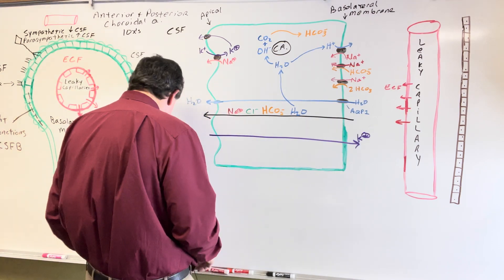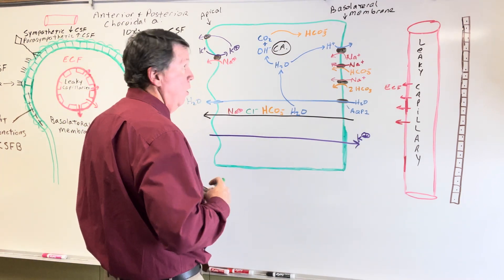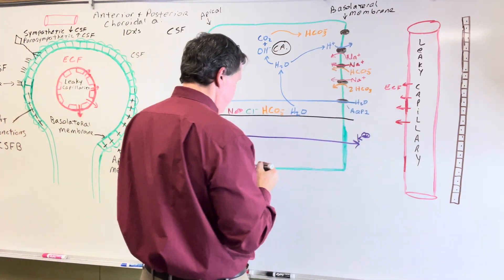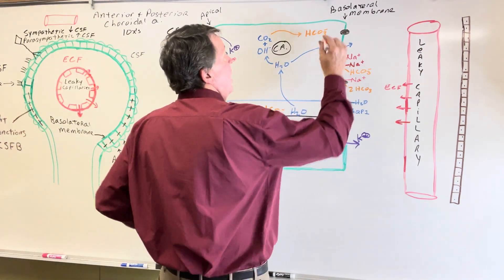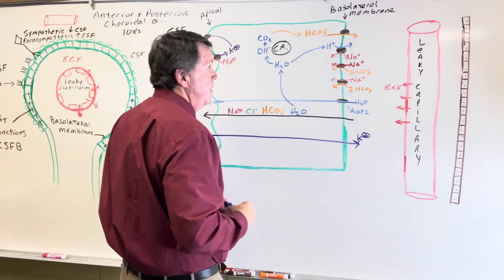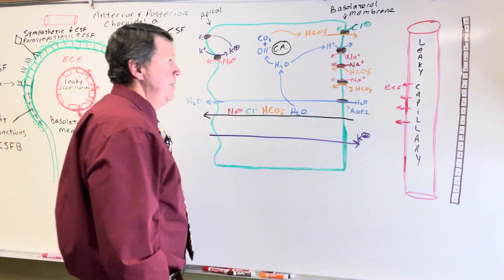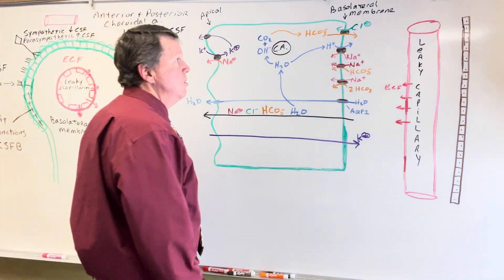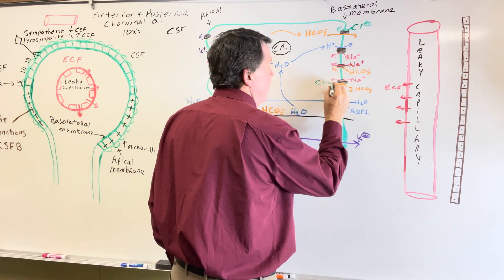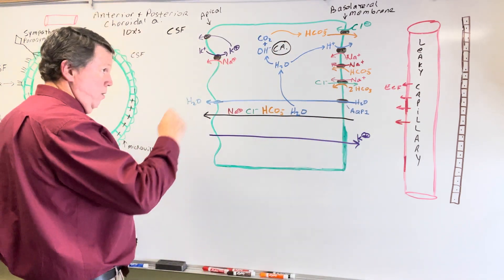There is an exchange protein on the basolateral membrane that causes bicarbonate to go out while at the same time bringing a chloride ion in. There's also a chloride going out through another pathway. So through this chloride-bicarbonate exchanger, chloride enters the cell while bicarbonate exits.